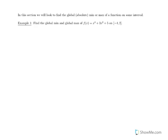In this section we're going to talk about optimization. We've already done some optimization problems earlier in chapter 3, but now we are going to be doing word problems and we need to translate those problems into the problems we've seen earlier. When we're talking about optimization, we're trying to find the global or absolute minimum or maximum of a function on some interval.